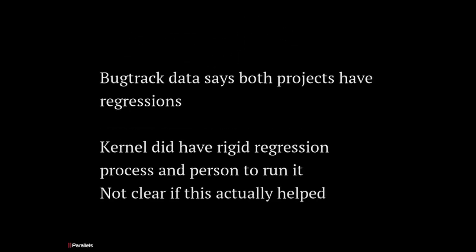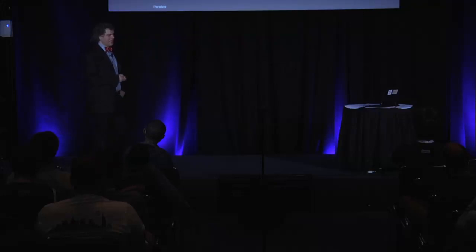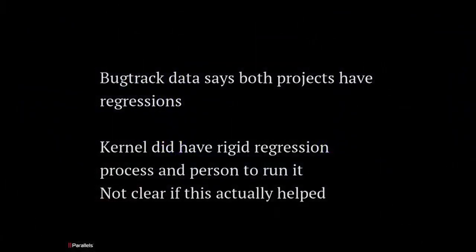Regression analysis is inconclusive. Both projects have regressions. A regression is a fault in a feature that existed in a previous release without a bug, which now has a bug in the next release. For the kernel, we used to have a formal process that tracked regressions, but if you look at the number of regressions with and without that process, they're exactly the same — so the formal process did nothing to help. As far as I can tell, OpenStack doesn't even track regressions formally. The data is pretty inconclusive.